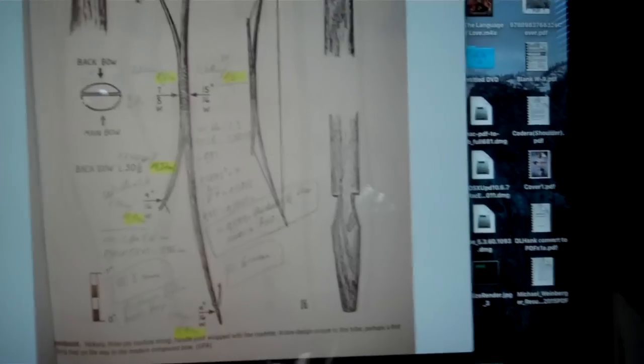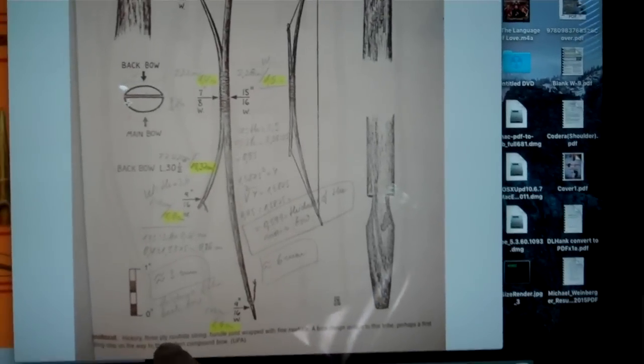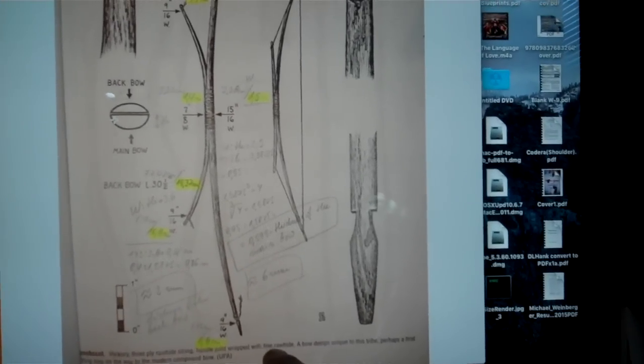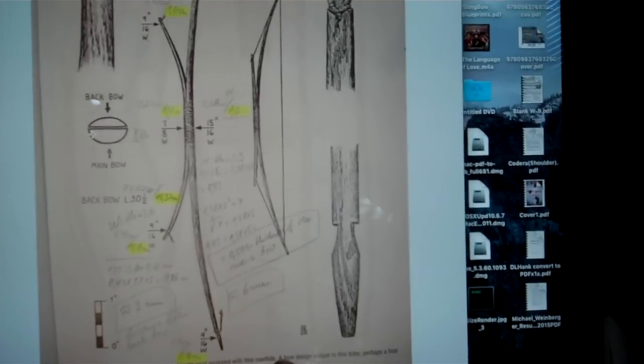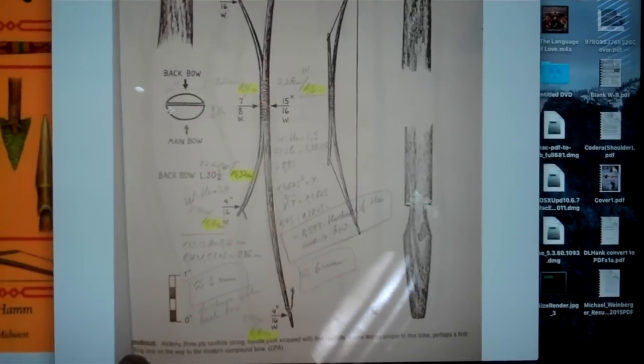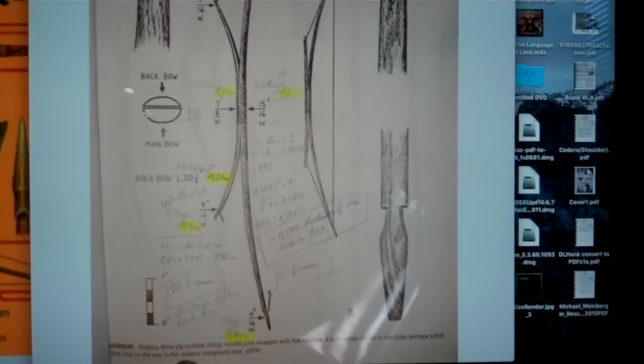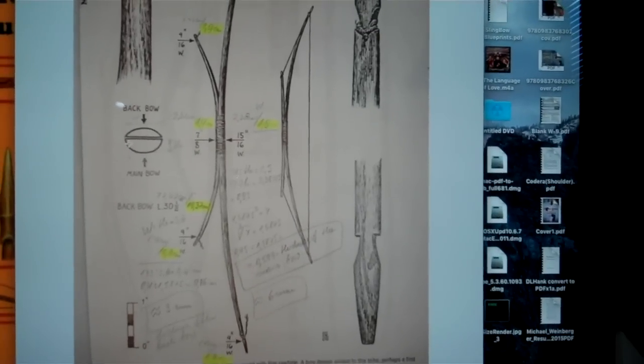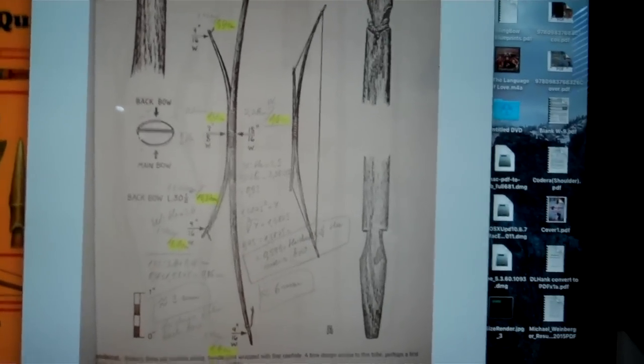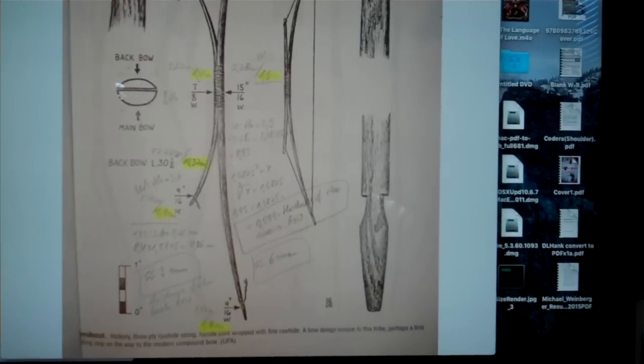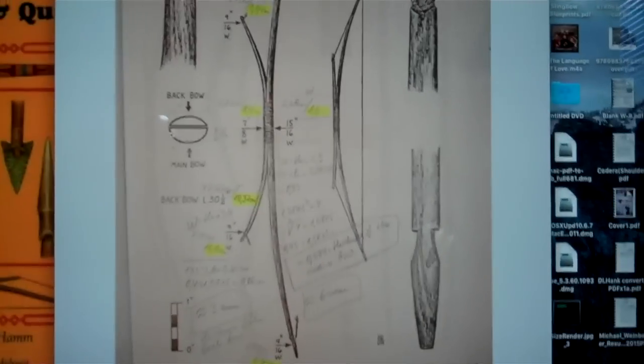And I'm surprised to hear that these were made, this was a hickory bow that he took his drawings from because hickory is so good, which completely shoots down the idea that for me anyway, that this was as a result of poor bow wood. There must've been some other reason. The string was a three ply rawhide string. The handle joint was wrapped with fine rawhide. This is a bow design unique to this tribe, perhaps a first step on the way to the modern compound bow. That's what I was referencing, on the way to becoming a compound bow.